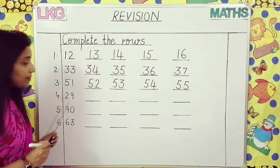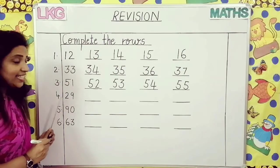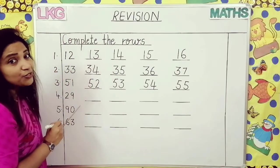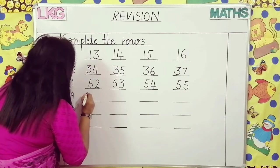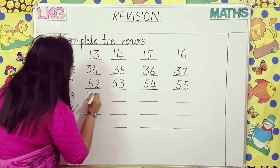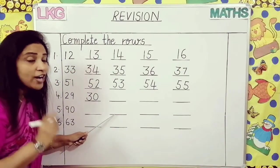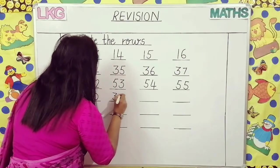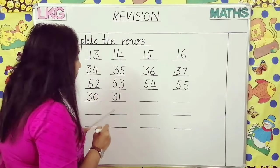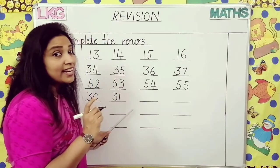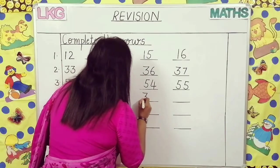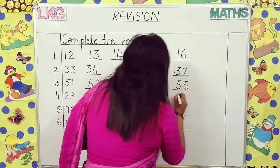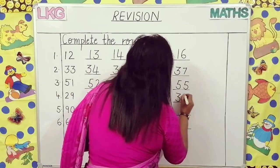Now come to the next number. Which number is this? Twenty-nine. What comes after twenty-nine? Thirty. What comes after thirty? Thirty-one. After thirty-one? Thirty-two. After thirty-two? Thirty-three.